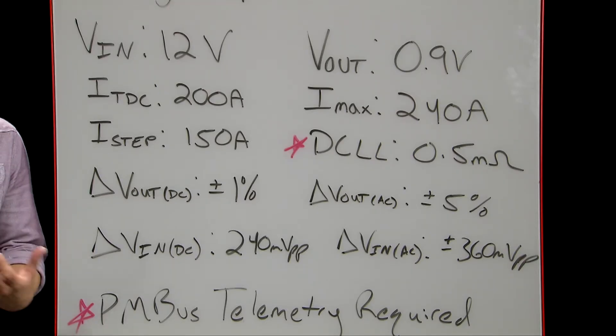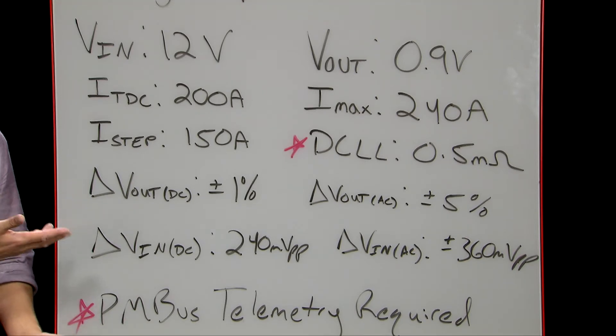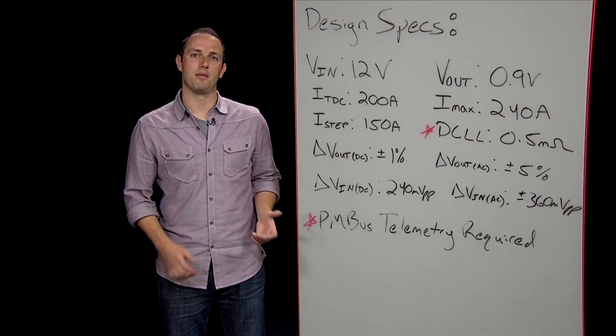Here are the specs for our design and they're meant to mimic the basic requirements of a generic high-powered processor you may find in server applications. Most of the specs are pretty straightforward to anyone who's done a DC-to-DC switcher design before with the possible exception of two, the DC load line and the PM bus.